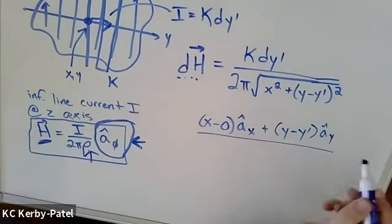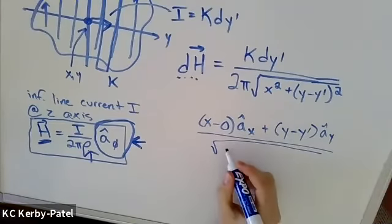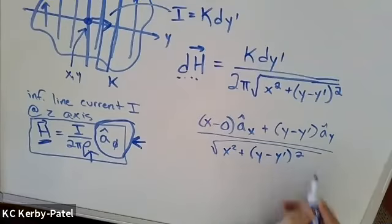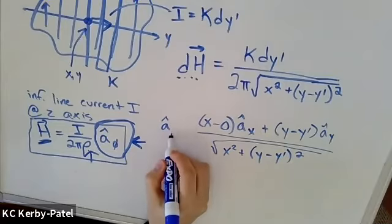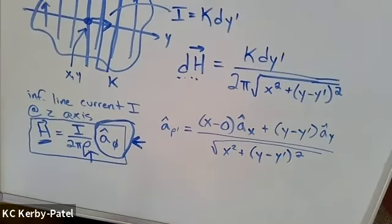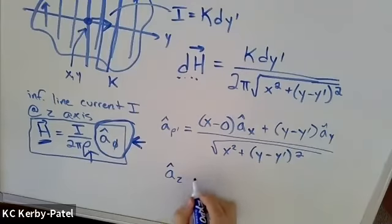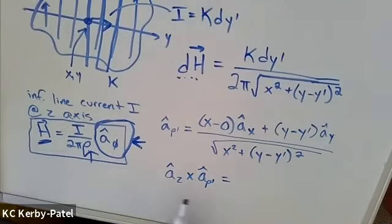Divided by the magnitude of that, which is the same rho replacement square root again, so divided by all of this: x squared plus (y minus y prime) squared. And this is my new—I'm going to write this as a hat rho prime, because that's my new offset radial distance from the source. And if I want to do my cross product there, a hat z cross a hat rho prime, what I get is z cross x.